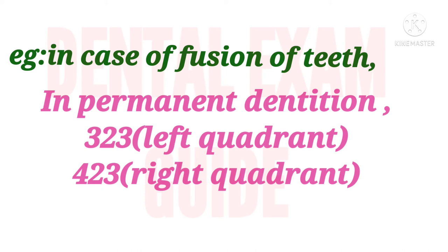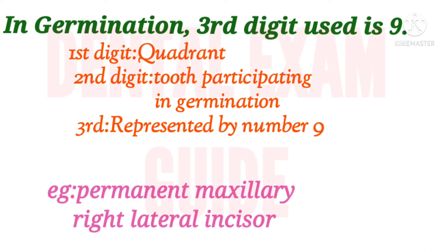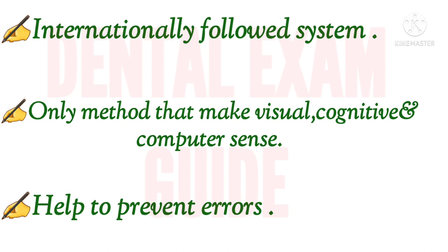Another developmental anomaly called germination is denoted by adding the extra number 9 to the two-digit system, where the first digit indicates the quadrant, the second digit indicates the tooth participating in germination, and the third number added is 9. For example, germination in the permanent maxillary right lateral incisor is represented by the digits 1-2-9, adding the extra digit 9 to the two-digit system.